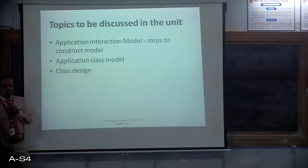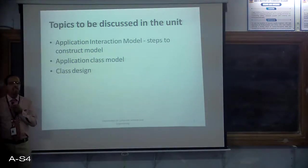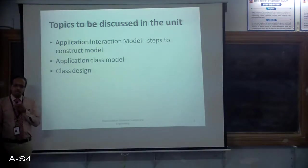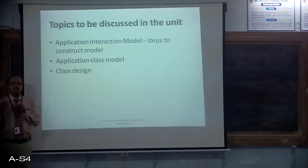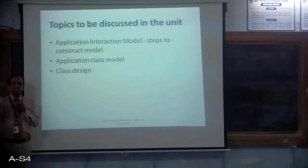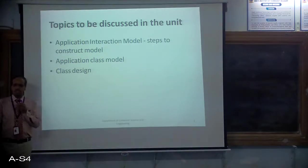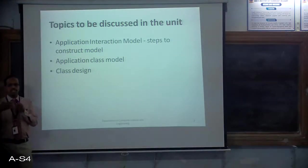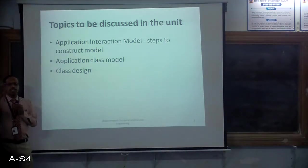We have discussed these five steps briefly and then discussed modeling and its use in object-oriented software development. There are three models: the state model, the interaction model, and the class model. The state model helps in modeling the dynamic structure, the use case model helps in modeling the static structure, the class model also models static structure, and the interaction model handles the system when it is in a dynamic state — that is, when it is running.